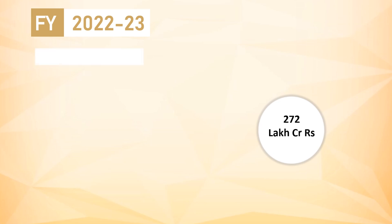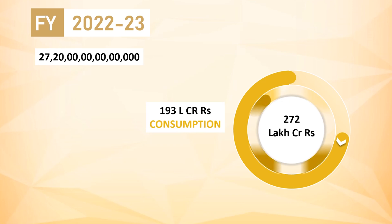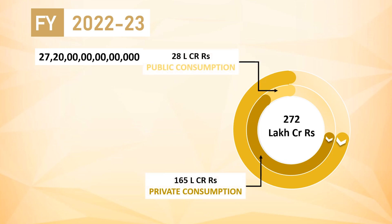If we break it down in terms of expenditure components as mentioned in the formula, the first and major contribution is from consumption, which is estimated to be around 193 lakh crore rupees. This can be further broken down into private consumption of 165 lakh crore rupees and government consumption of 28 lakh crore rupees.